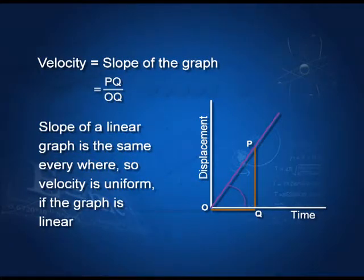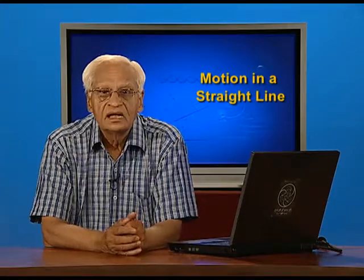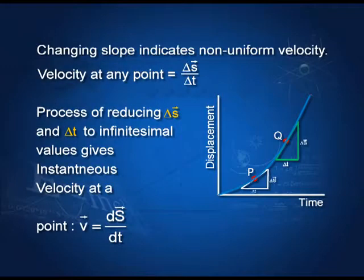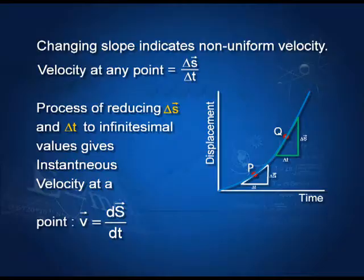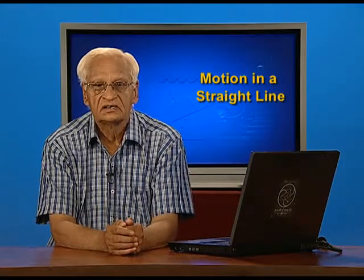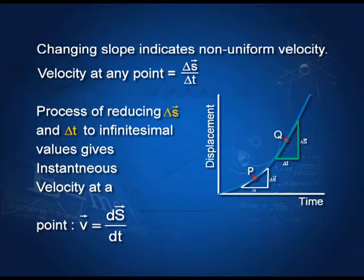However, if the graph is not linear, then the velocity at a point like P is found by the slope at P, that is ΔS by Δt. At point Q, the slope is found again by ΔS by Δt. You can see that the slopes at these two points are different, which means that the velocity is changing — it is not constant.